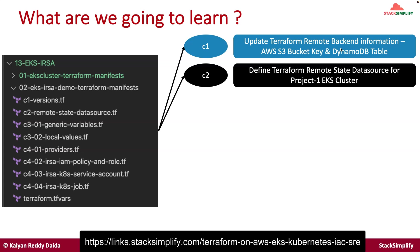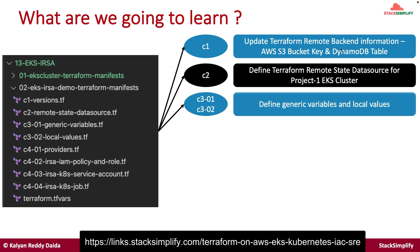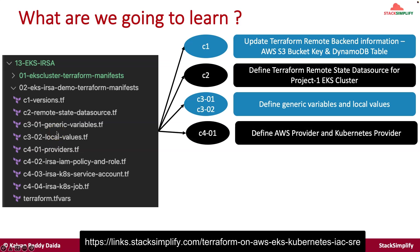In C2, the remote state data source — coming from previous sections — shows how to access project 01 EKS cluster related information in project 02, with no changes from our previous demos. C3 01 and 02 are generic and local values, same as project one, maintaining the naming convention HR-dev-something. In C4 01, we will define the AWS provider and the Kubernetes provider. In C4 02, we will define the IRSA IAM policy and role — the policy is the existing S3 read-only access policy associated with the IAM role.